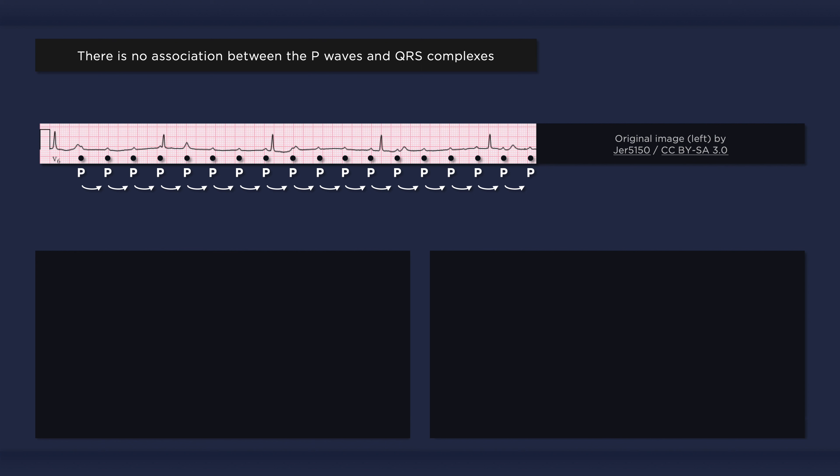Note that not all P waves are easy to identify. One P wave is abutted to the QRS complex, while another has resulted in a distorted T wave. Sometimes the P wave will not be visible at all because it is completely buried within a QRS complex. It is also important to note that the atrial rate can be irregular, such as when a patient with complete heart block has atrial fibrillation.